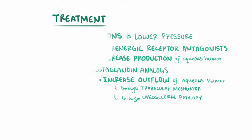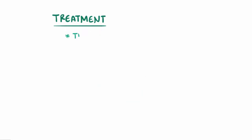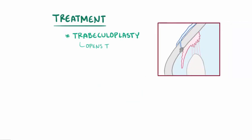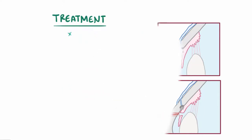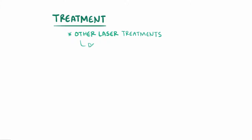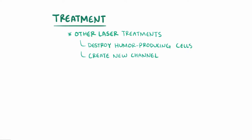In addition to medications, there are also laser treatments available. Trabeculoplasty is a treatment where a laser is used to open the trabecular meshwork, and this helps treat open-angle glaucoma. There's also iridotomy, which uses a laser to punch a tiny hole in the iris, which helps to treat closed-angle glaucoma. Other laser treatments include ones that destroy the humor-producing cells to reduce fluid production, and in serious cases, they can be used to create a new channel through which the aqueous humor can be drained out.